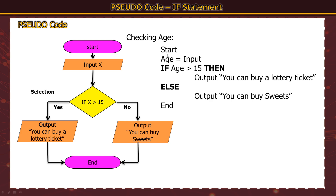In the pseudocode: start, input age. Entering 15 — if 15 is greater than 15, which it's not, so it comes down to the else and prints 'you can buy sweets'. Running again with 17: if 17 is greater than 15 — that's true — so it goes inside the if and prints 'you can buy a lottery ticket'. The keywords are: if, then, else. Remember to include start and end. That is how you lay out pseudocode selection in an exam.